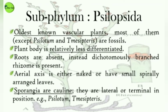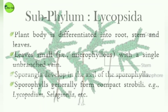The first subdivision, Psilopsida, includes the oldest known vascular plants and most of them are now fossils. Their plant body is relatively less differentiated; roots are absent and instead they have a dichotomously branched rhizome. Their aerial axis is either naked or has small spirally arranged leaves. Their sporangia are cauline, meaning they are directly borne on the axis or stem, and are lateral or terminal in position. Examples are Psilotum and Tmesipteris.